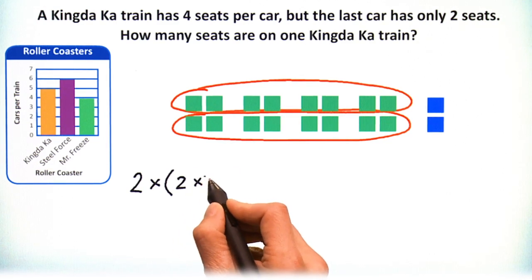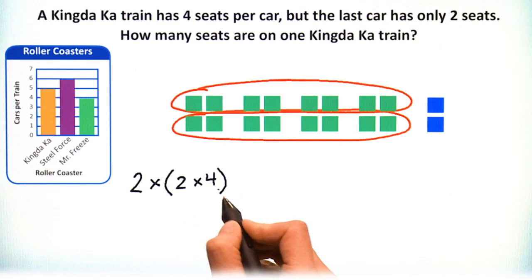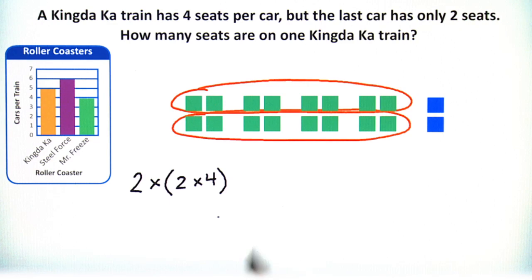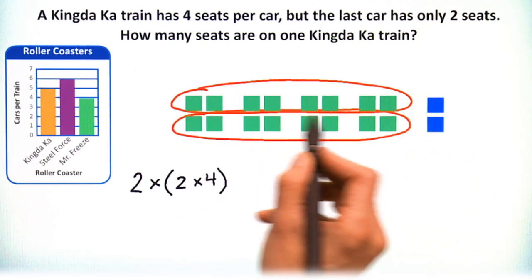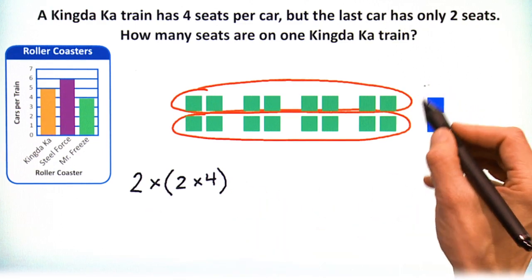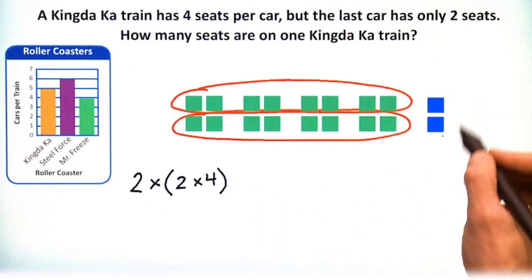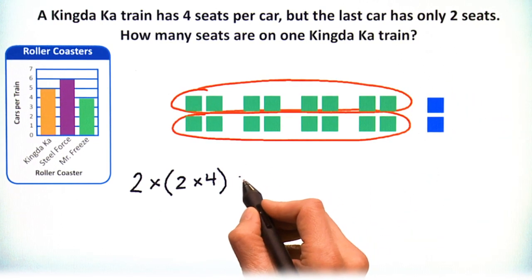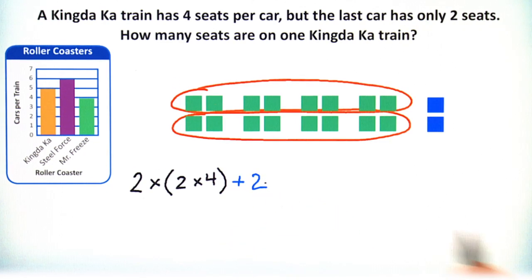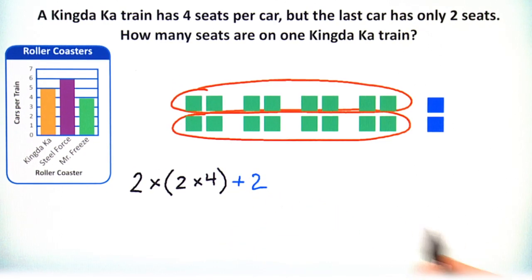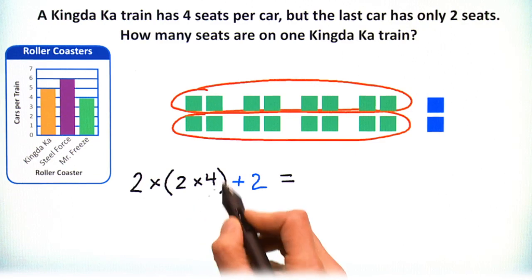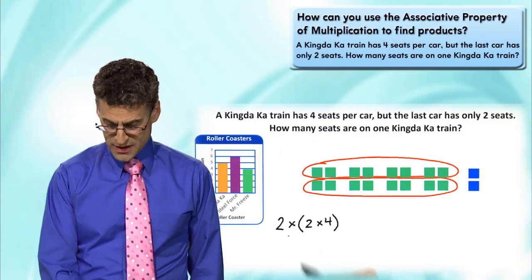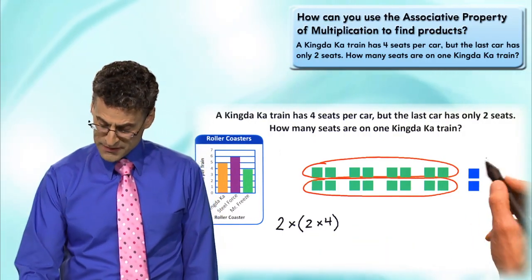I would write it as two times something, because I have two lassos. Two times what? Notice that I have groups of two: group of two, group of two, group of two, group of two - and how many groups of two do I have? One, two, three, four. So I have two times four groups. That's for the top red circle, and then I have a bottom red circle - that's why I multiply by two.